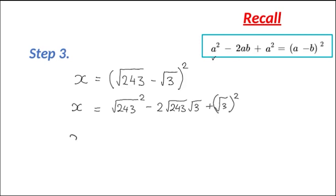Now let's evaluate. We get a cancellation here: 243 minus 2 by the square root of 243 by 3, which is 2 by the square root of 729, plus the square root of 3 squared, which is 3. So let's evaluate the square root of 729. We get 243 minus 2, and we will get a value of 27, plus 3.